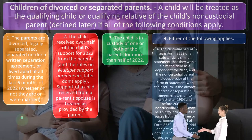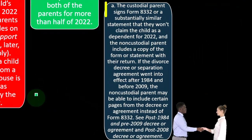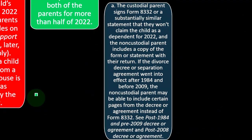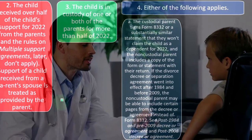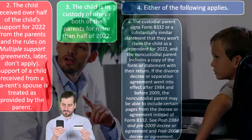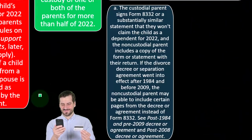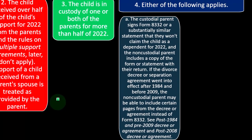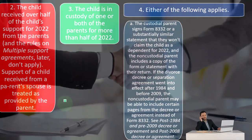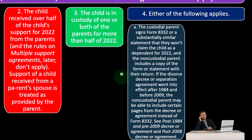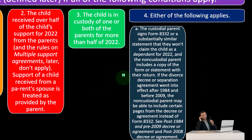Condition four — either of the following applies. Option A: the custodial parent signs Form 8332 or a substantially similar statement that they won't claim the child as a dependent for 2022. So the custodial parent — who would typically be the one claiming the dependent — is basically saying they're not going to claim them, with a written agreement for that. Possibly that's part of a separation or divorce agreement, possibly because there was a tax benefit in whatever arrangement they settled on. The non-custodial parent then includes a copy of the form or statement with their return to verify this is the case. If the divorce decree or separation agreement went into effect after 1984 and before 2009, the non-custodial parent may be able to include certain pages from the decree or agreement instead of Form 8332.